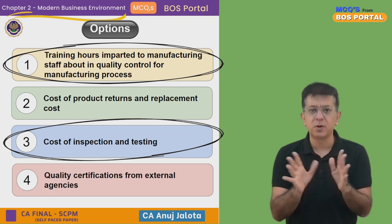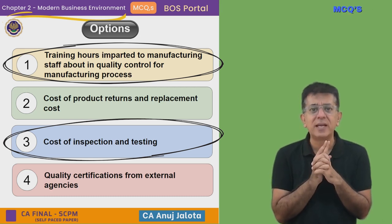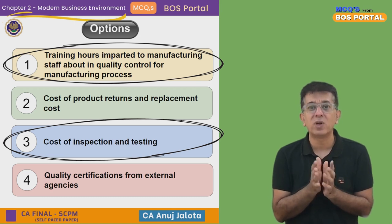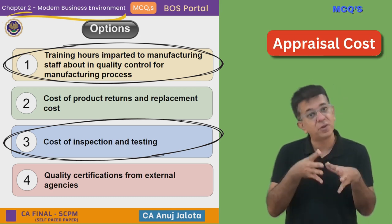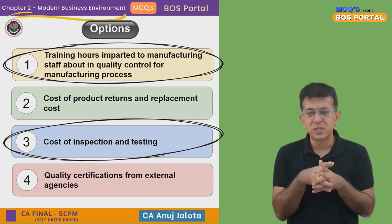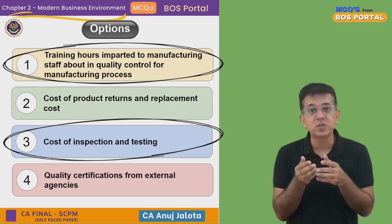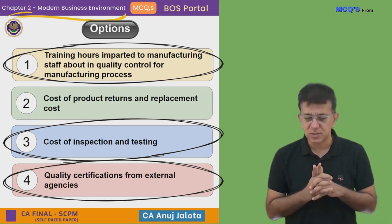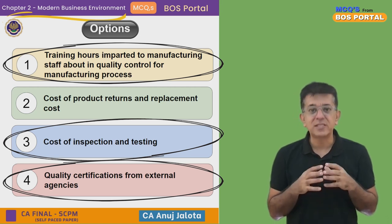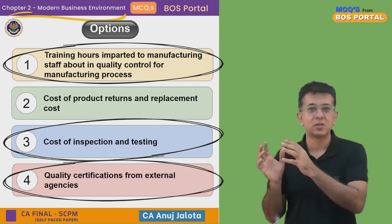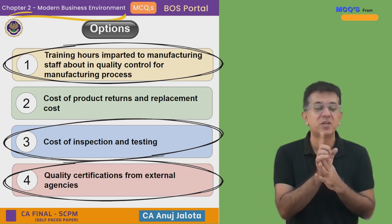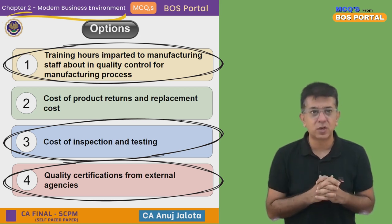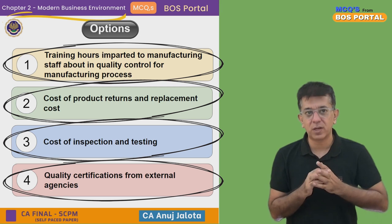Spending more on inspection alone does not measure whether there will be zero returns. If you've done the complete chapter, this cost is called appraisal cost — cost incurred after you make the product to ensure it conforms to quality. But just because you spend more on appraisal, that itself doesn't measure whether there will be zero returns. Option 4: quality certifications from external agencies like ISO 2000 and so on. This is again appraisal cost — you take quality certifications to communicate to the customer that your quality is very good. But this itself does not ensure that your quality was actually as per the customer's perception.